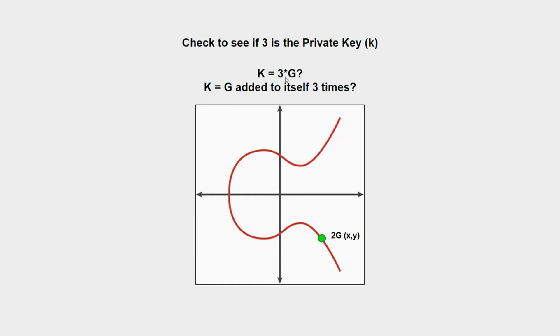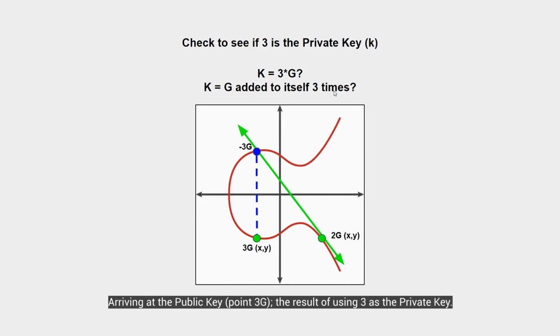Now you check to see if 3 is the private key, since we know 2 is not. In other words, does 3 times g give you that final k we're looking for? Or is g added to itself three times that final public key point we're looking for? So the process is the same. We'll add 2g to itself to give us the tangent point, resulting in that third intersection point of negative 3g, which is then reflected over the x-axis to land on our final point of 3g.